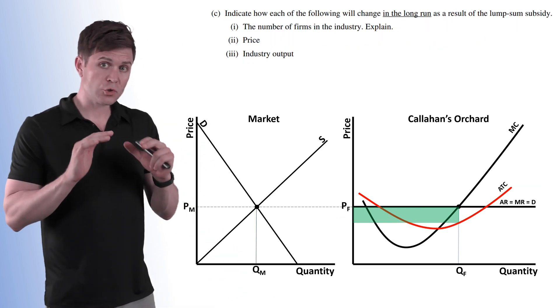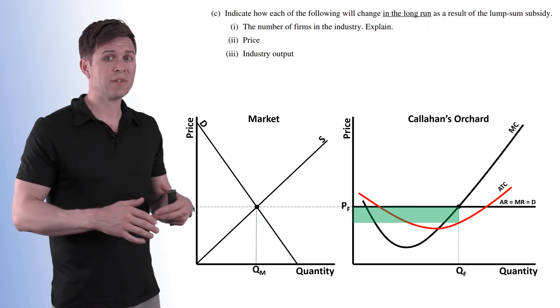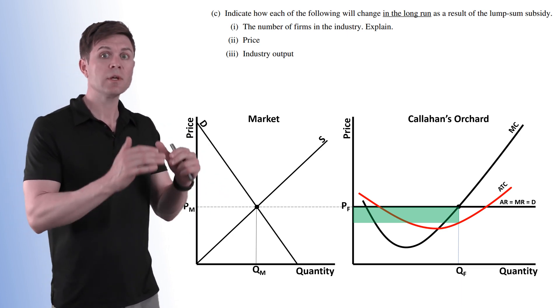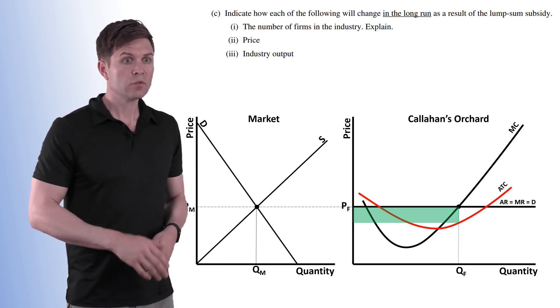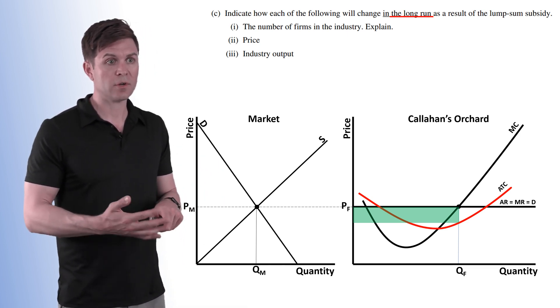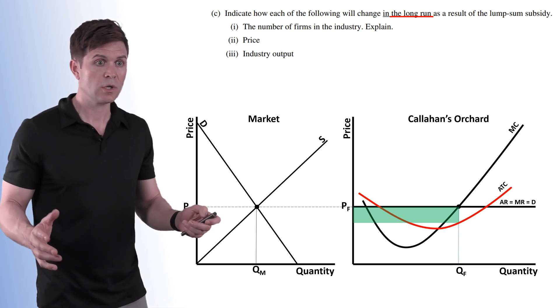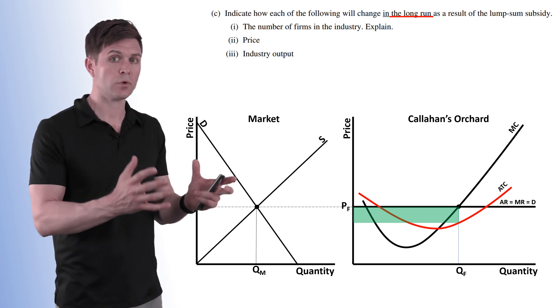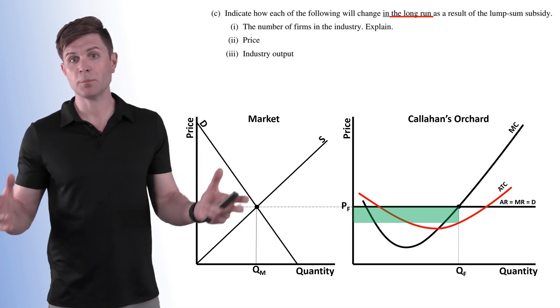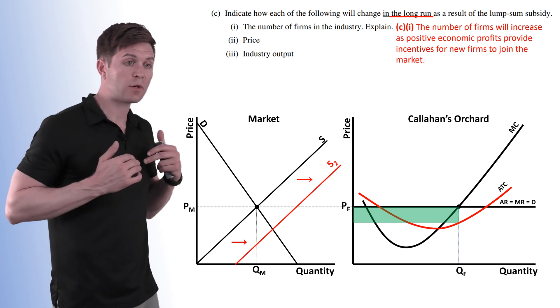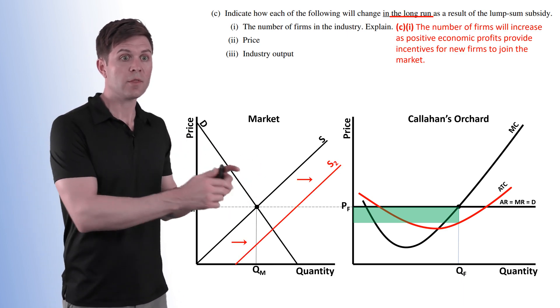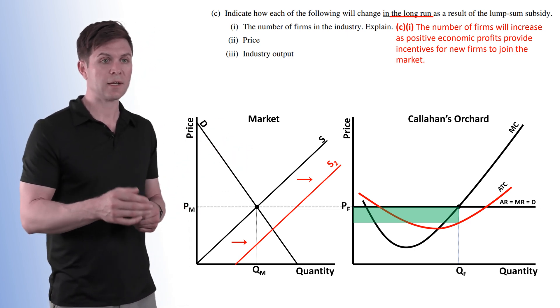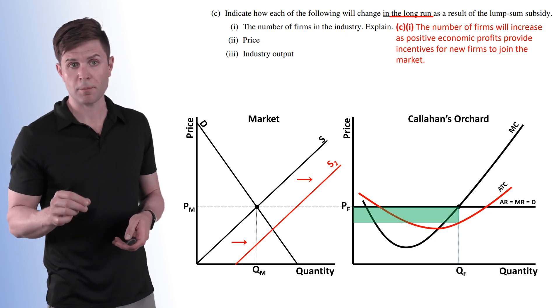So while part B only looked at short run impact, part C is going to take us to the long run. How does this lump sum subsidy impact the market and the firm in the long run? So the first thing it has us identify is the number of firms in the industry. How will that change? So because there's that profit incentive now, Callahan's Orchard, the individual firm is earning a profit. Other possible firms see this and they join the market. So this is going to shift our supply curve to the right. The number of firms is going to increase shifting that supply curve to the right as positive economic profits provide incentives for new firms to join the market.